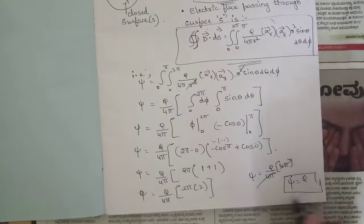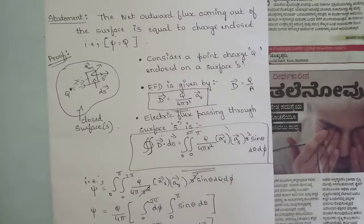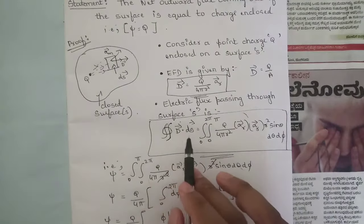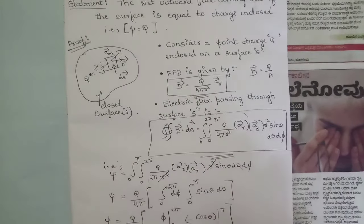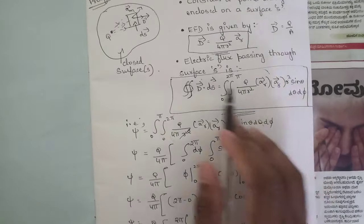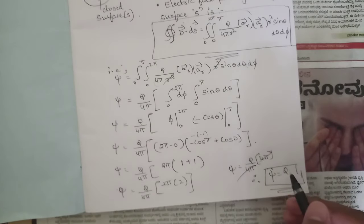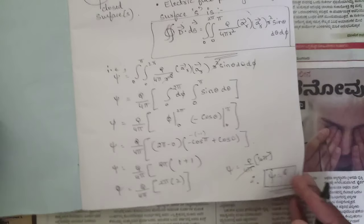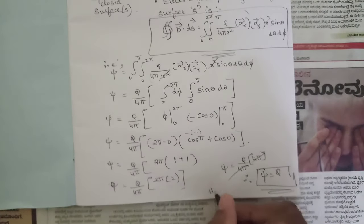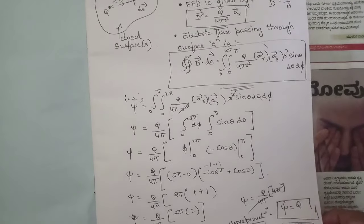The 4π cancels, giving ψ = q. This corresponds to Gauss's Law. Using the electric flux density and the surface integral, we have derived that the outward flux coming out of the surface equals the enclosed charge. Hence proved. This derivation is very important — please make a note of it.